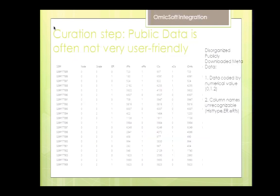Just to note on why we actually need data curation: this is an example of a data set many of you know well — GSE7390, a breast cancer study from Veridex that was used to develop a 76-gene prognostic signature for breast cancer metastasis. This is how the data looks in GEO — you have metadata and data that is coded, which is a very common problem with public data sets, including the ADNI study and the PPMI data set mentioned here yesterday.